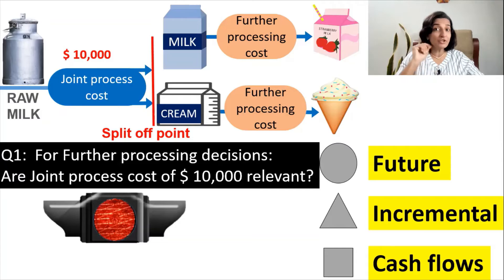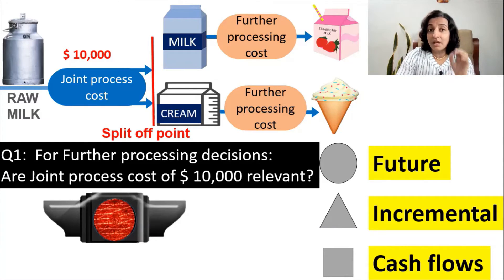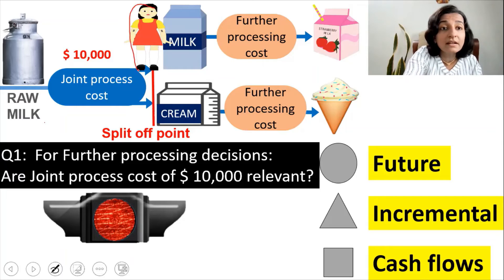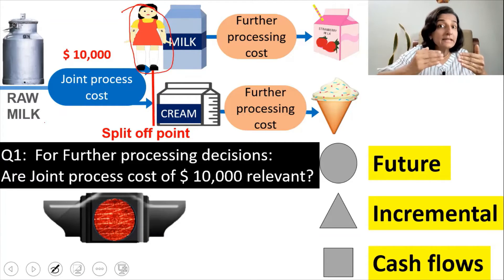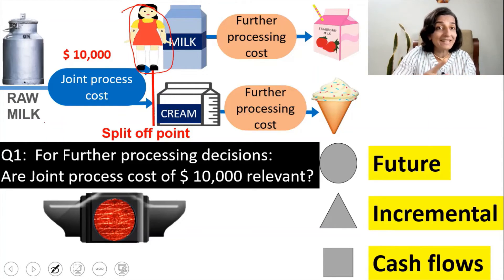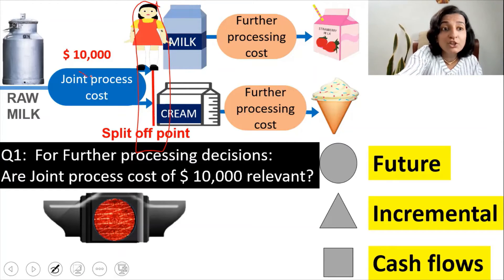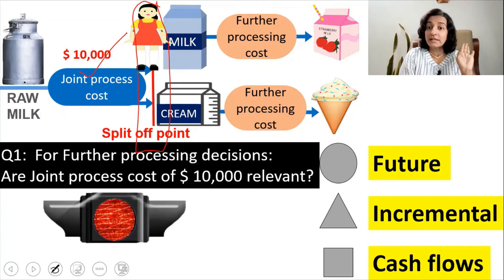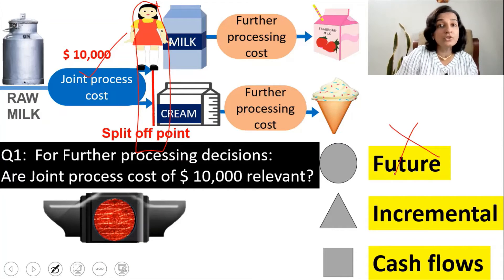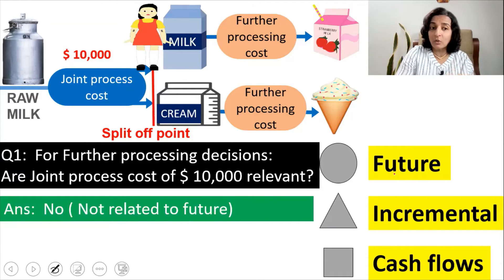Let's see the answer — it's the red light. You should not be including the joint process cost as a relevant cost. When are we taking the decision? We are taking the decision of whether to further process at the split-off point. At that point, the joint process cost is a past cost — it is not related to the future. The first feature is not satisfied. So the answer is no — it will not be included as it is not related to the future.